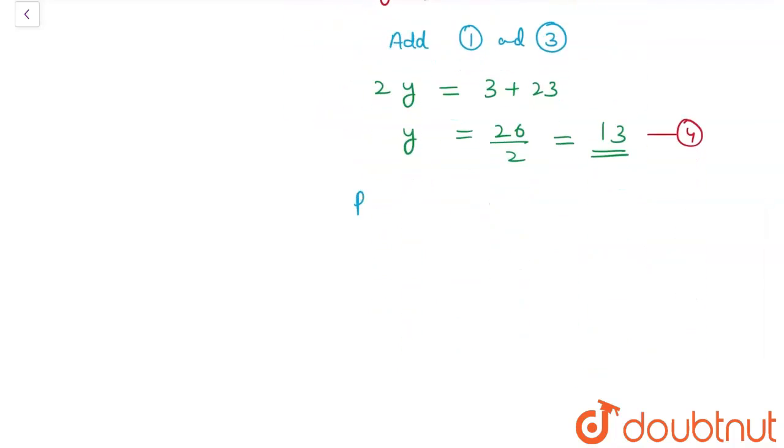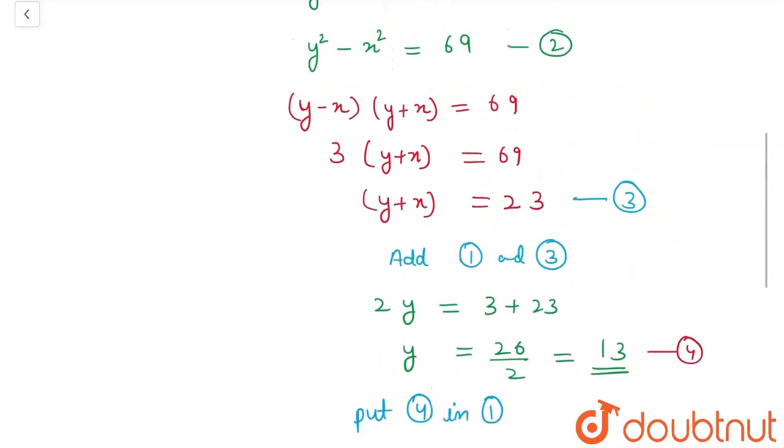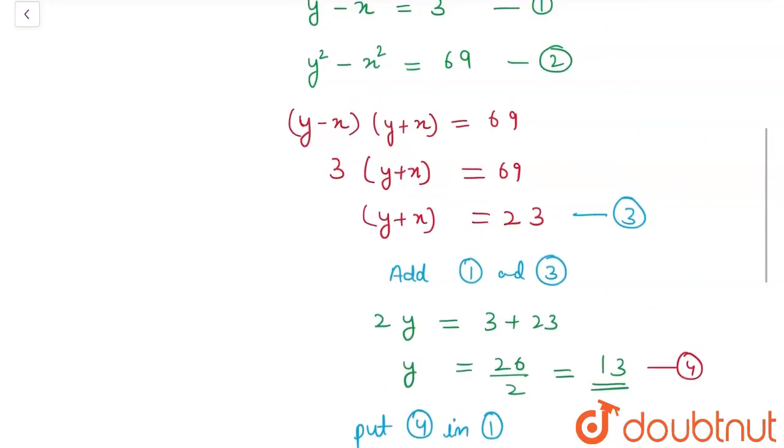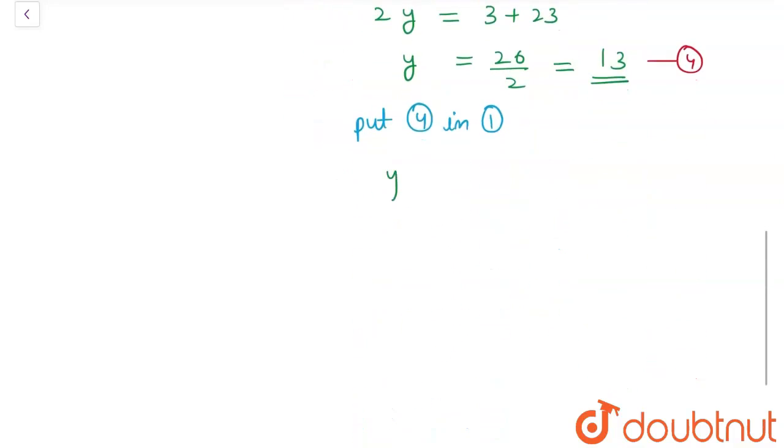So let's put equation four in equation one to find x. My equation one was y minus x is equal to 3, and my y is equal to 13. It will be 13 minus x is equal to 3. Therefore, my x will be 13 minus 3. Therefore, my x will be equal to 10. Therefore, my one number is 10 and my other number is 13.